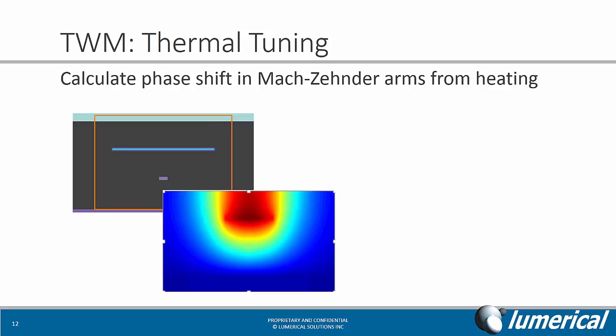In addition to electrical and optical analysis, you may also want to look at the phase shift that results from heating as you tune the MZI center arms. In this case, you can use the heat transport solver to calculate the temperature map resulting from placing a heater above the waveguide. Then we can use optical simulations to calculate the change in the propagation properties of the waveguide as a function of heating.